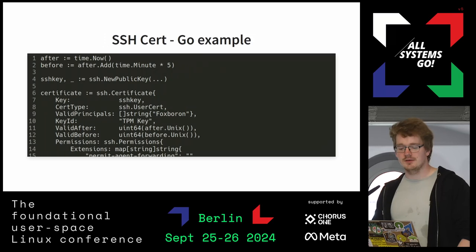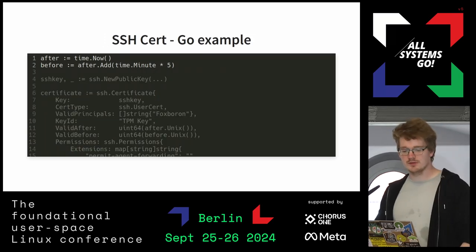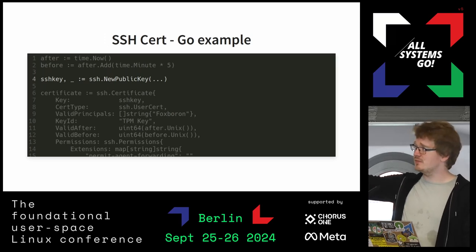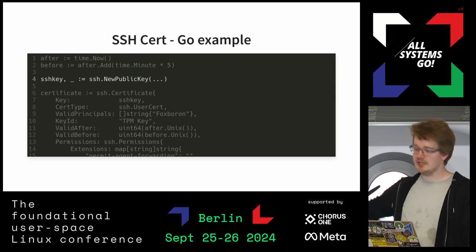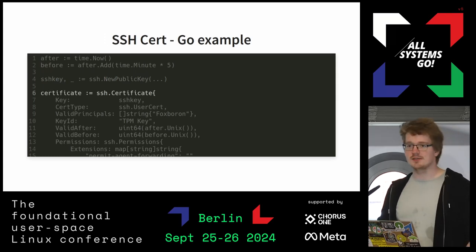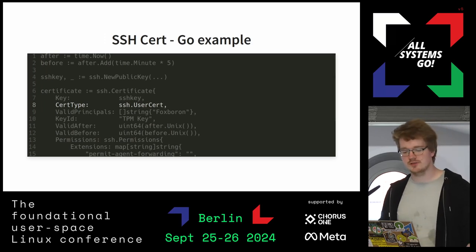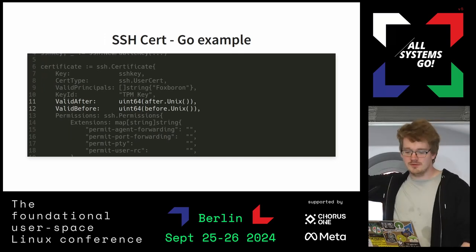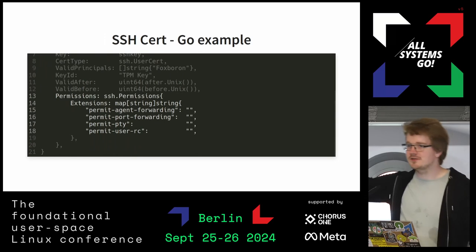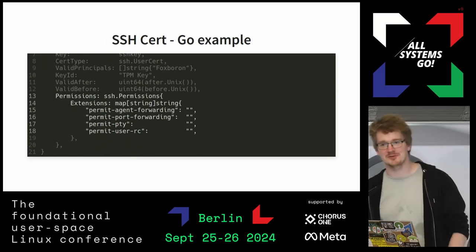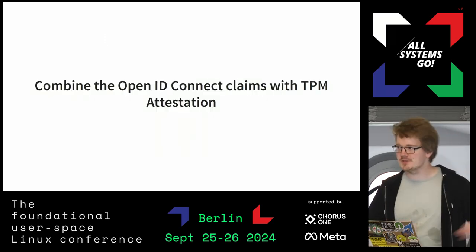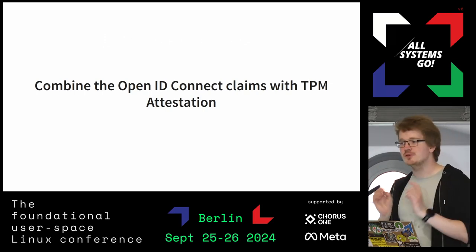Go makes this extremely easy to set up. We create some timestamps, initialize a new SSH public key — in my implementation using the public TPM template to synthesize an SSH key — and stuff this into the SSH certificate struct. You say it's a user cert, set the TPM key as a key ID, set valid after and valid before, choose permissions, and hand it back to the user. But the issue now is we have SSH certificates, machine identities, and identity claims, and we want to combine them.